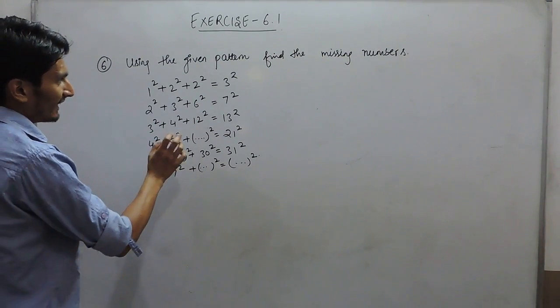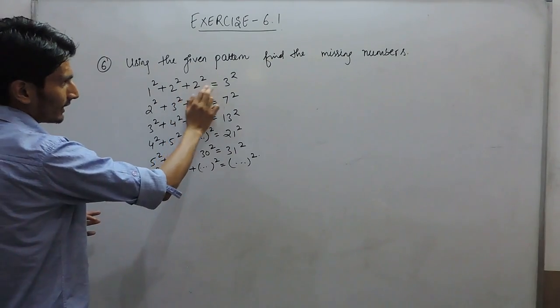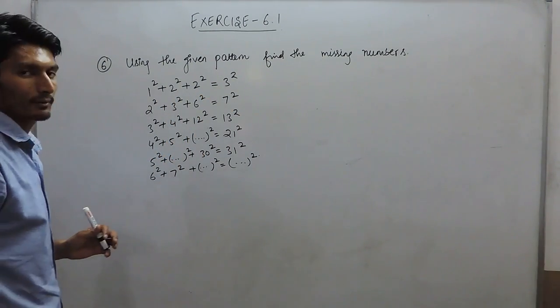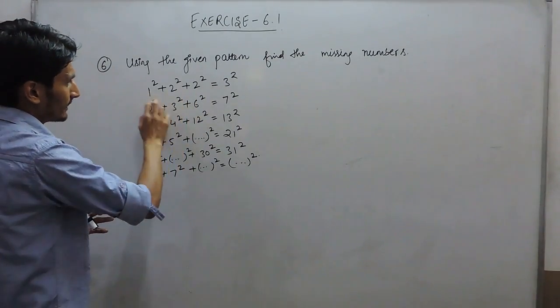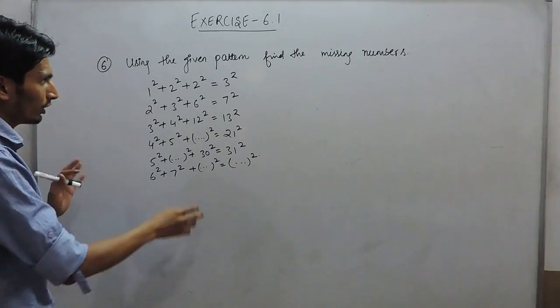Here on the left hand side we are given 3 numbers and on the right hand side there is only 1 number. On both sides we are squaring all the numbers and adding these numbers on the left hand side.